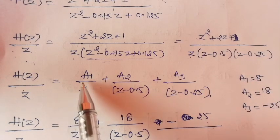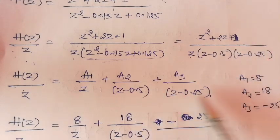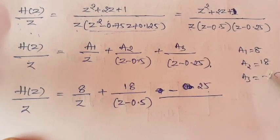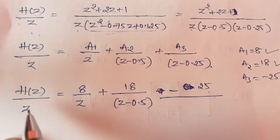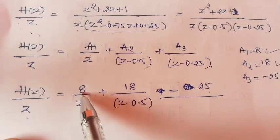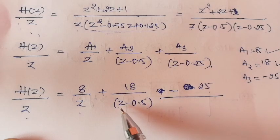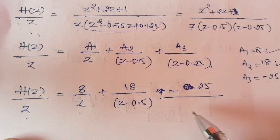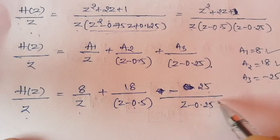Hence we have three constants: A1/z, A2/(z - 0.5), and A3/(z - 0.25). Calculating the constant values, we get A1 = 8, A2 = 18, and A3 = -25. Substituting: H(z)/z = 8/z + 18/(z - 0.5) + (-25)/(z - 0.25).